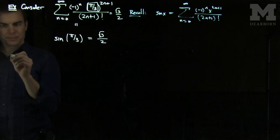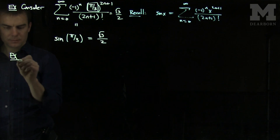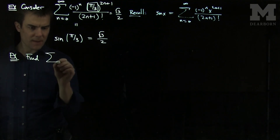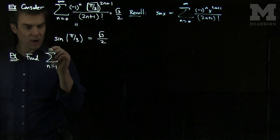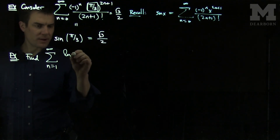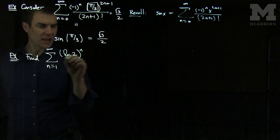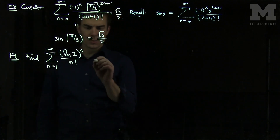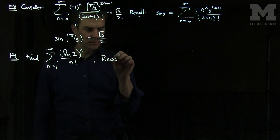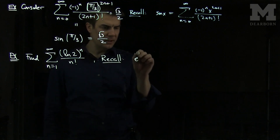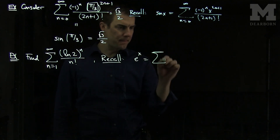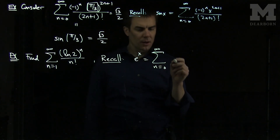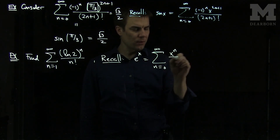Let's look at another example. Let's find the sum, n goes from 1 to infinity of the natural log of 2 to the n over n factorial. What we can do is recall that e to the x is the sum, n goes from 0 to infinity of x to the n over n factorial.